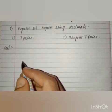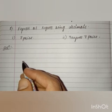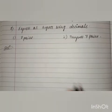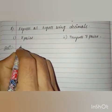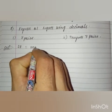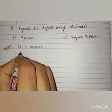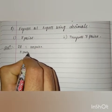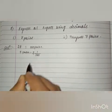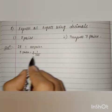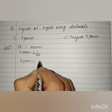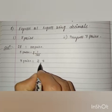7 paisae we have to convert into rupees and mention in decimal form. We know that 1 rupee equals 100 paisae, so 1 paisae equals 1/100 rupees. Therefore, 7 paisae equals 7/100 rupees.